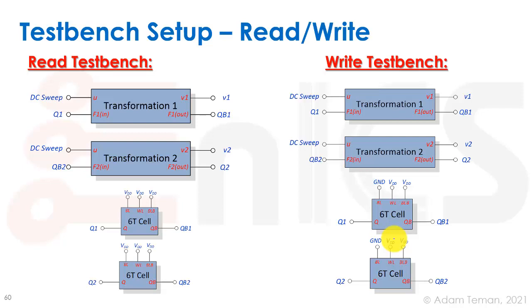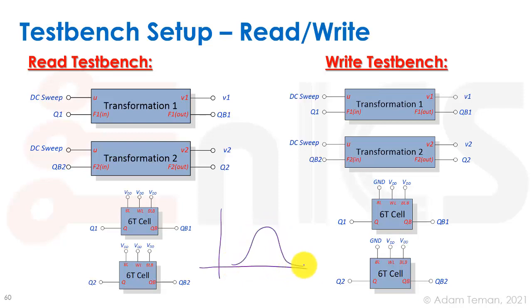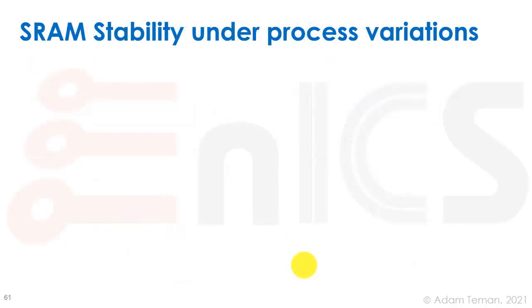This is really nice because now we just run a simple DC sweep. All four blocks are in the same testbench, so one DC sweep gives us the read SNM, write SNM, or hold SNM immediately. Therefore we can run Monte Carlo simulations with process variations and get a nice histogram of how our SNM is distributed over many samples.